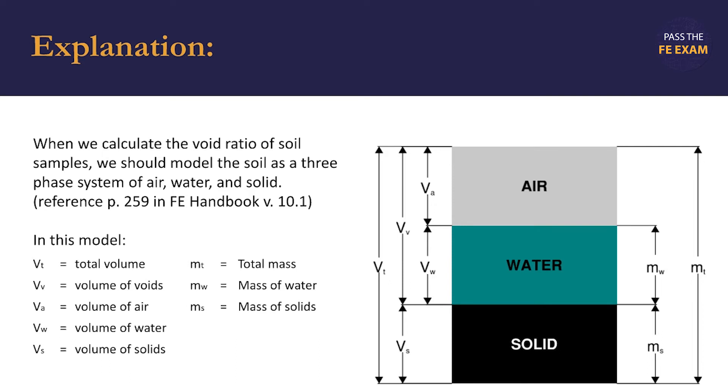In this model, we're provided with the following definitions. V sub T is the total volume, which is the sum of the volume of the voids and the volume of the solids. V sub A is the volume of air, V sub W is the volume of water, V sub S is the volume of solids.